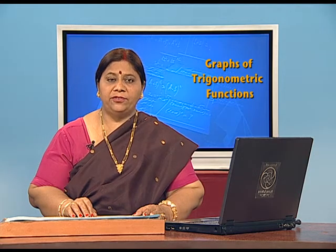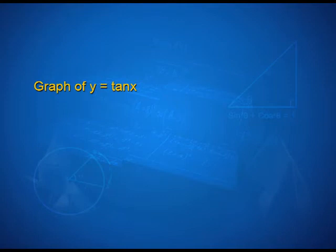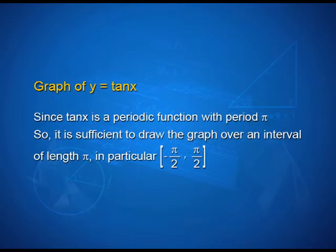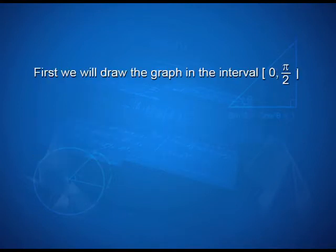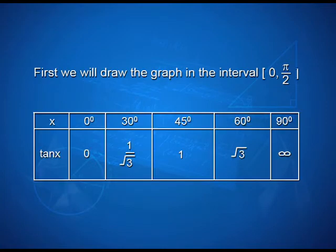Let us see how the graph of y = tan x looks. Since tan x is a periodic function with period pi, it is sufficient to draw the graph over an interval of length pi, in particular between −pi by 2 and pi by 2. We draw the graph in the interval 0 to pi by 2 using the table: tan 0° = 0, tan 30° = 1/√3, tan 45° = 1, tan 60° = √3, and tan 90° = infinity.